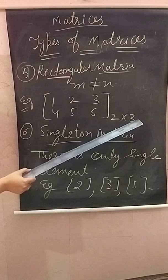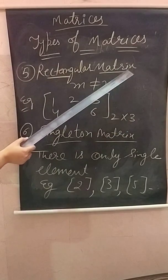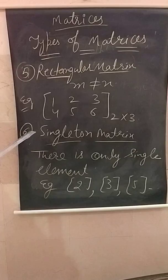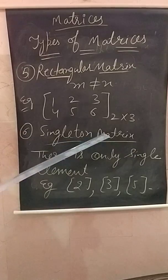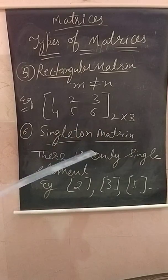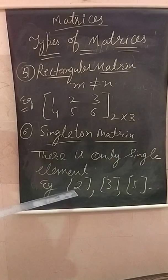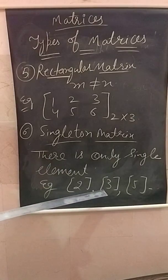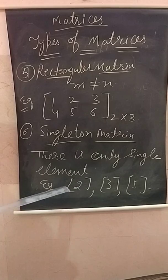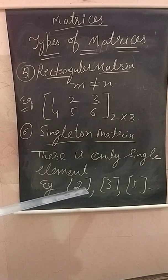This is called a rectangular matrix. Next is the singleton matrix. In a singleton matrix there is only a single element, like element two, element three, or element five — just one single element. This is called the singleton matrix.